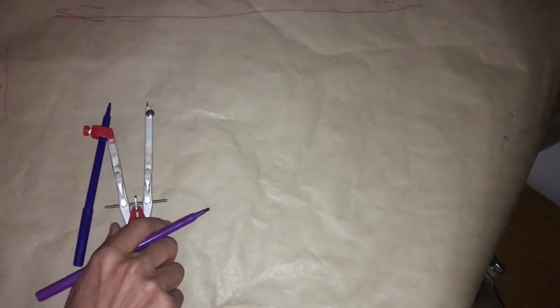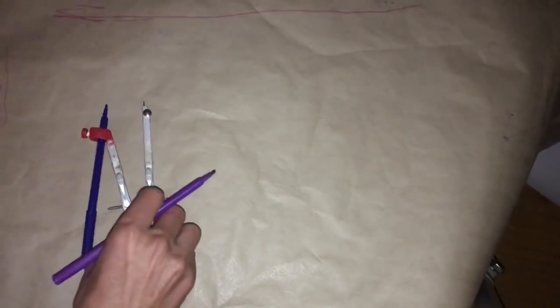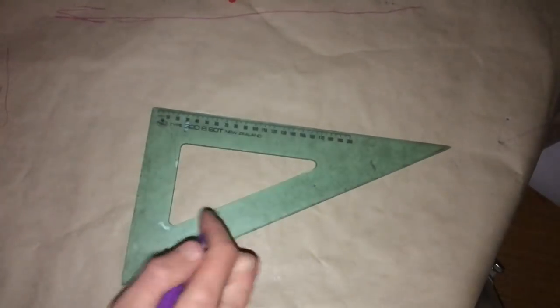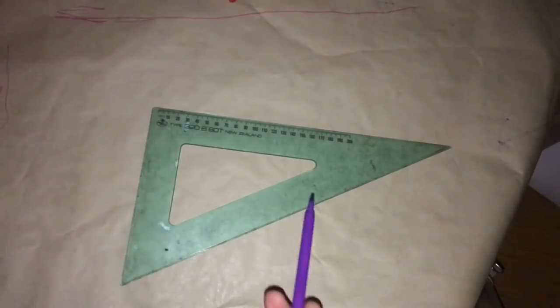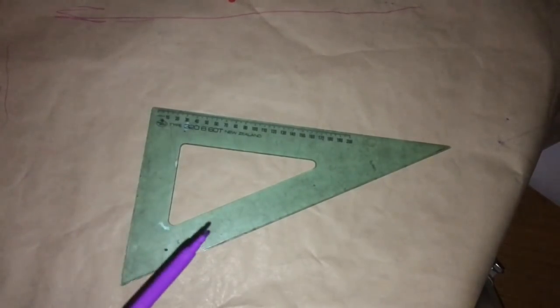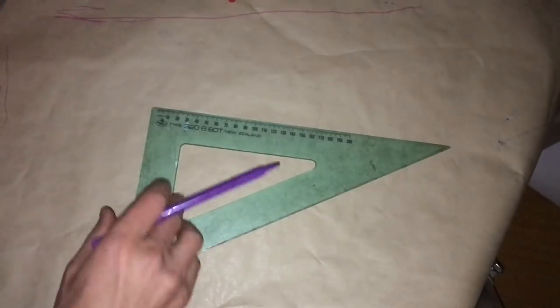Okay, so let's have a look at one of the defining features of the vesica, the flower of life, seed of life. It's actually represented by this traditional drawing tool, the 30, 60, 90 degree set square.